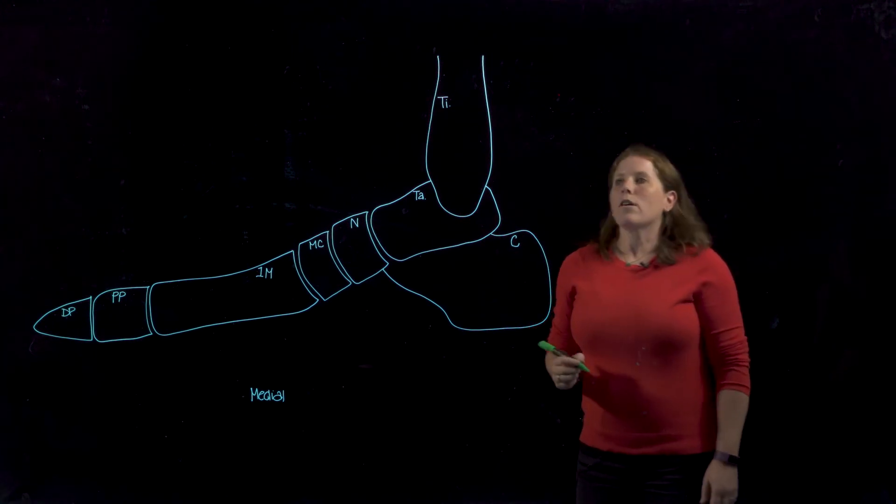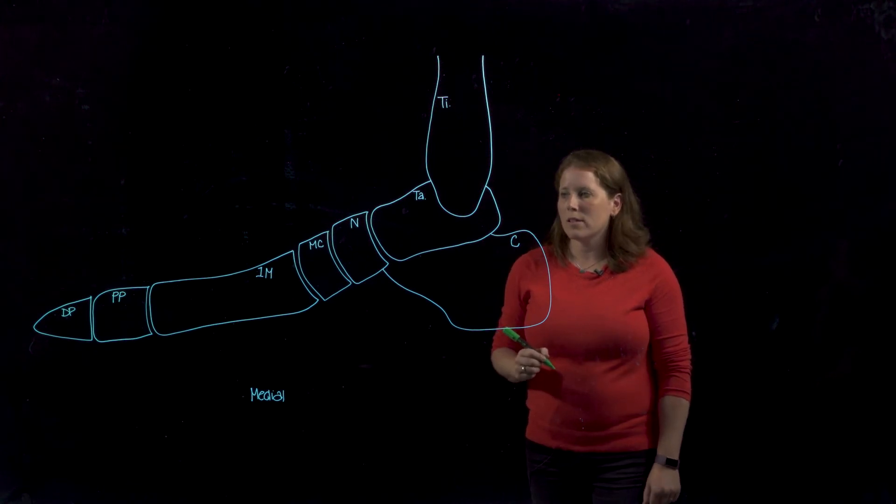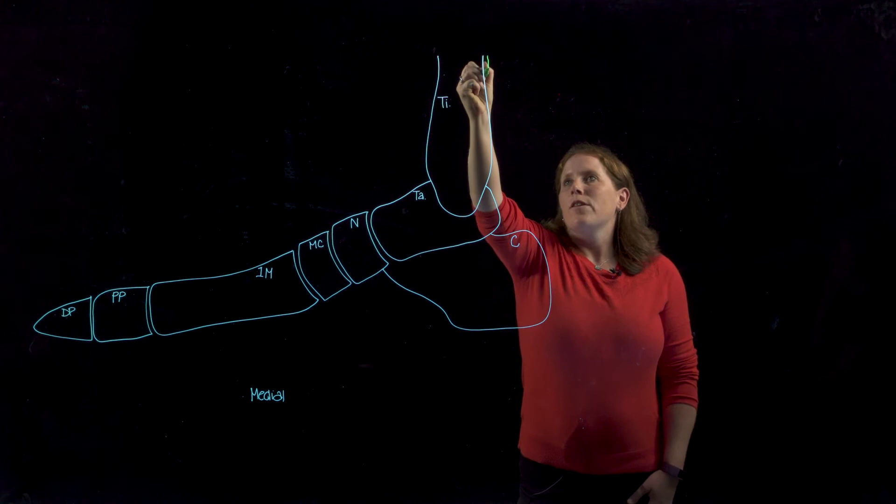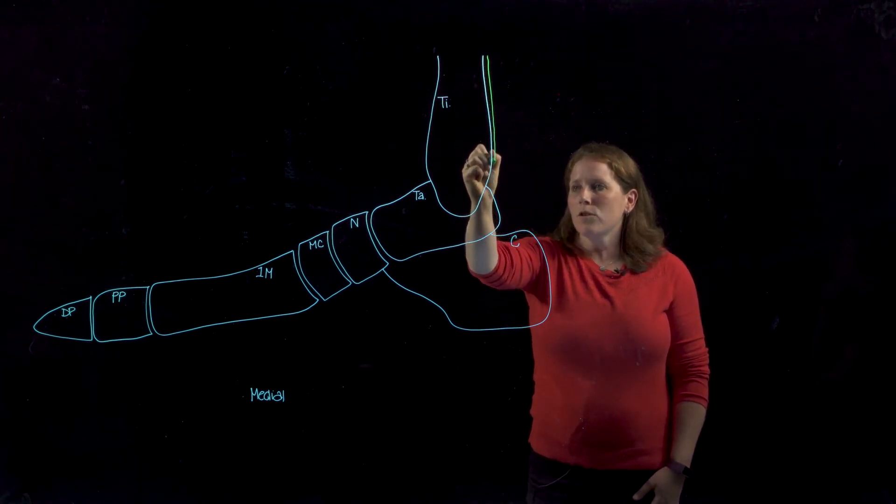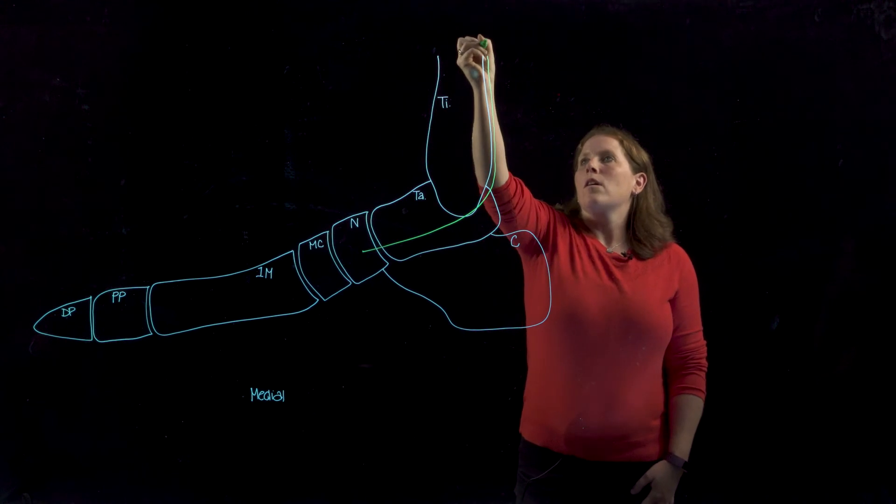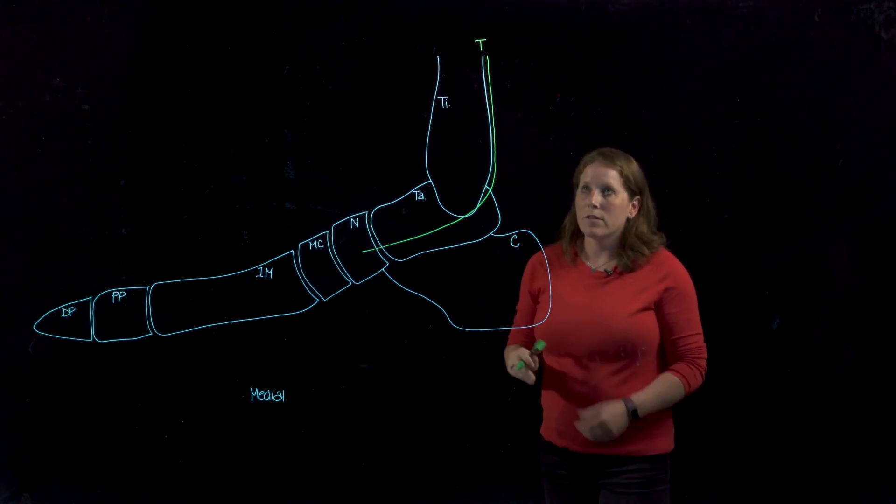Now there are three tendons that pass behind the medial malleolus to enter into the foot. The first one, the most anterior, is going to be tibialis posterior and so we'll identify that as T, tibialis posterior.